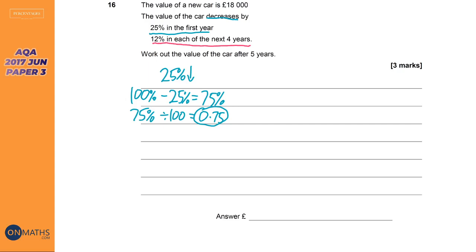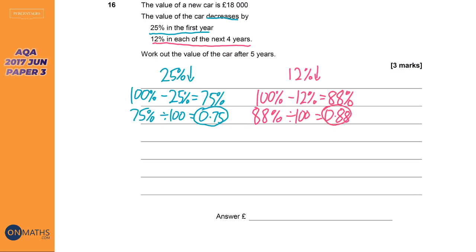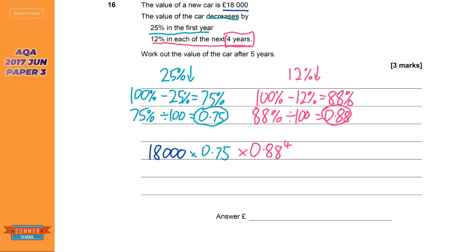For the next four years it decreases by 12%, so we start with 100, gone down by 12, so we're at 88. We make that a multiplier by dividing by 100 — that's 0.88. To answer the question, you get the amount (£18,000), times it by the first multiplier, then times it by the second multiplier for every single year it's applied. It says four years, so instead of writing times 0.88 four times, we just do it to the power of four — you get exactly the same answer. So on the calculator: 18,000 × 0.75 × 0.88⁴.